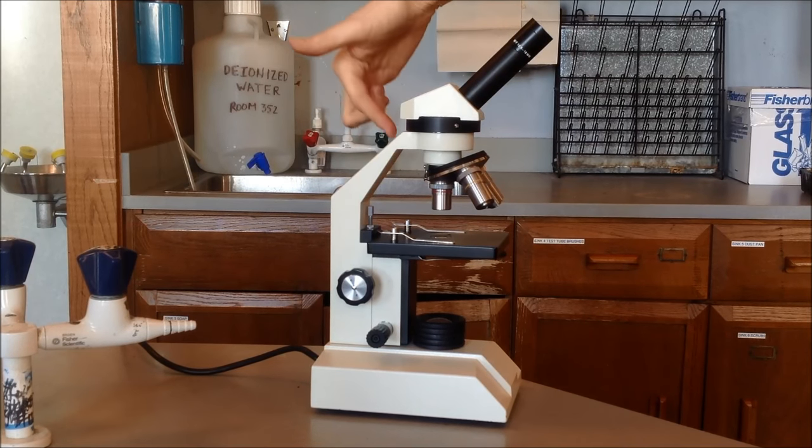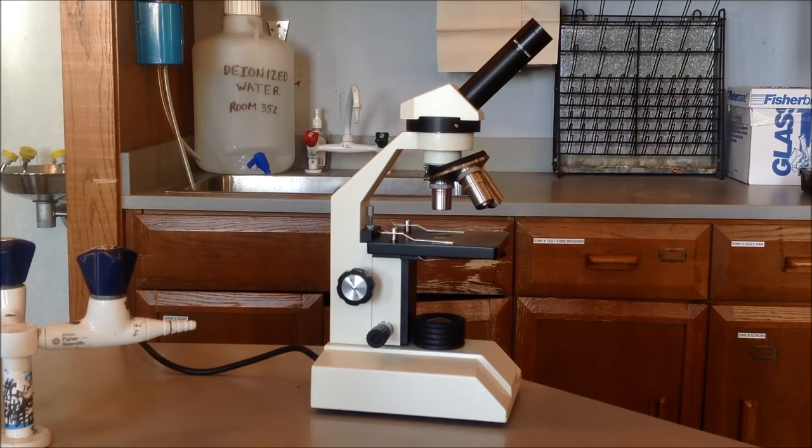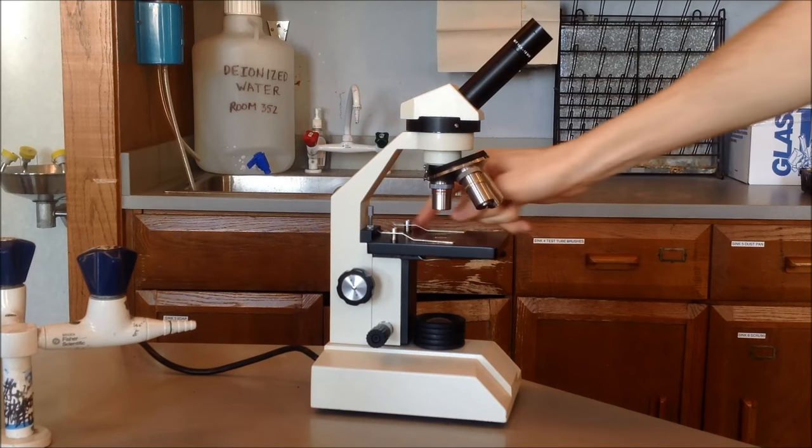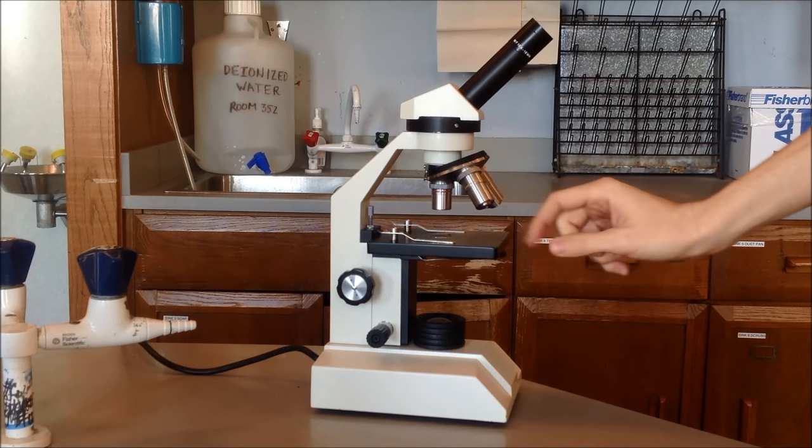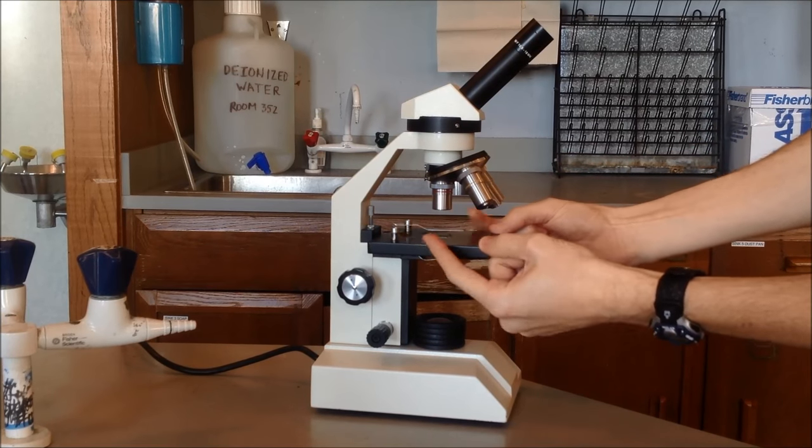The arm is this part right here, which we mentioned before. And then you have the stage with the stage clips. The stage is this thing right here. It's this big black square. And then the stage clips are on the stage. These are these metal things right here, like so.